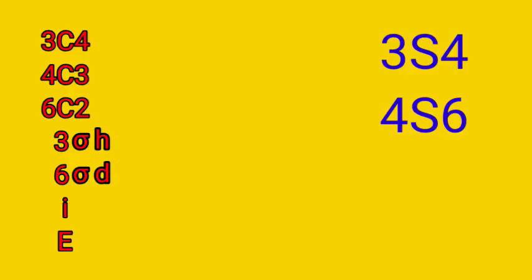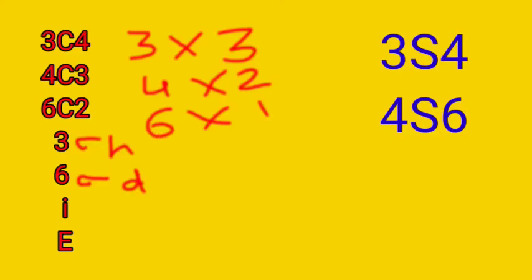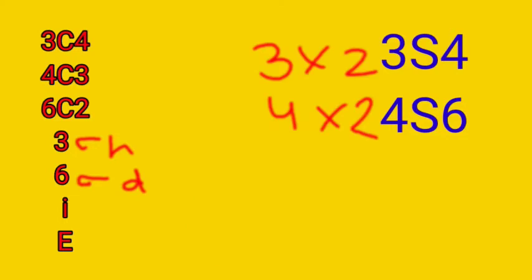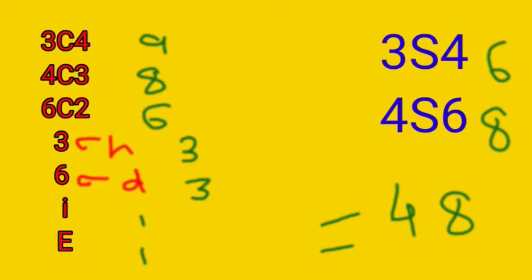This group has 3 C4 axes, 4 C3 axes, 6 C2, 3 sigma H, 6 sigma D, an inversion center, and identity. Counting total operations: C4 gives 3×3=9, C3 gives 4×2=8, 6 C2 gives 6×1=6, sigma H gives 3×1=3, sigma D gives 6×1=6, inversion gives 1, identity gives 1, S4 gives 3×2=6, and S6 gives 4×2=8. Total number of operations is 48, hence the order of this group is 48.